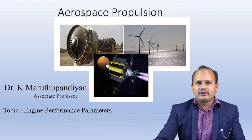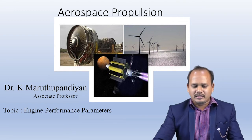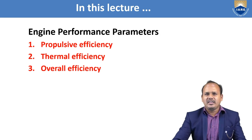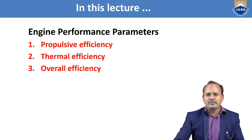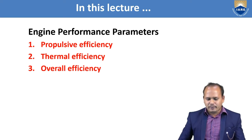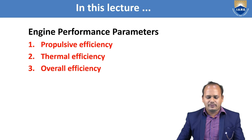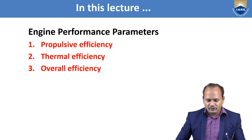In today's class we are going to see something about the engine performance parameters — what are the different parameters we use to measure the performance of a particular engine. In that regard we are going to see four performance parameters: propulsive efficiency, thermal efficiency, overall efficiency, and thrust specific fuel consumption. These are the four different parameters we generally use to measure the performance of an aircraft engine.